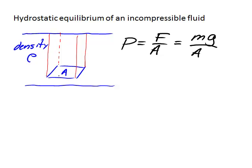M is the mass of the fluid in this box in the column above the area A. Now recall that density is mass over volume, and therefore mass is density times volume.